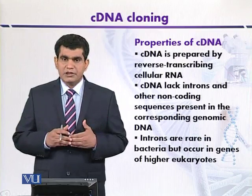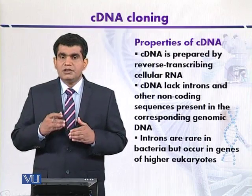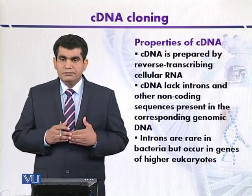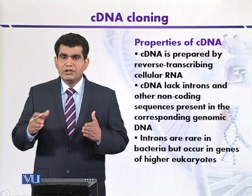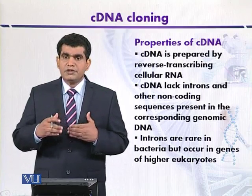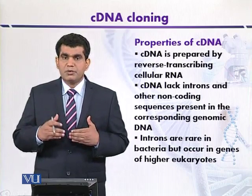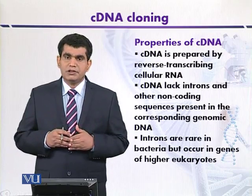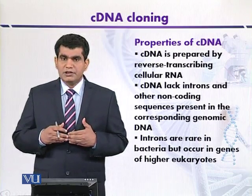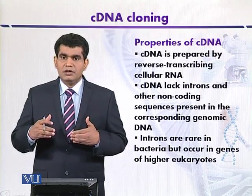Introns can be present at the five prime end, three prime end, or both sides of a gene. When the gene is transcribed, the introns are also transcribed along with it. So the messenger RNA first synthesized in the nucleus contains introns along with exons, which are the coding regions. In the next step, processing occurs by which the introns are removed from the messenger RNA through a process called splicing. After splicing, the messenger RNA lacks introns, contains only the coding region, and is well suited for cloning.